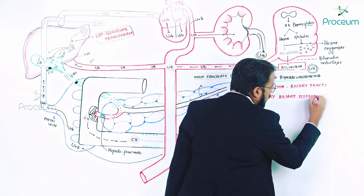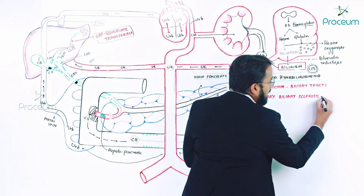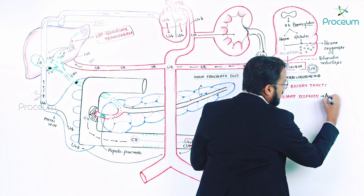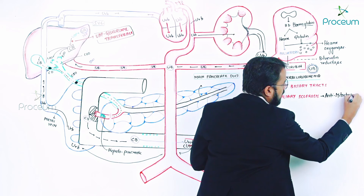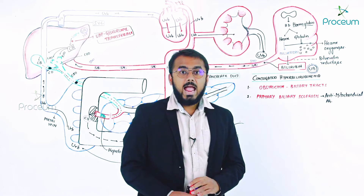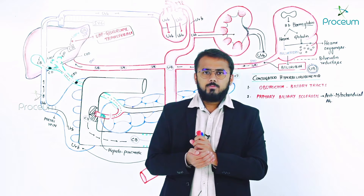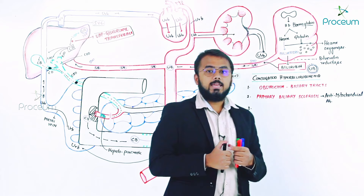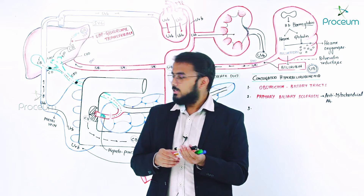The second important cause is primary biliary sclerosis — an autoimmune condition. Autoantibodies destroy the biliary tracts — the common bile duct, right and left hepatic ducts, cystic duct, hepatopancreatic duct. When these are destroyed, conjugated bilirubin cannot be properly sent into the duodenum; there will be leakage and it stays in the system. The autoantibodies responsible are anti-mitochondrial antibodies.